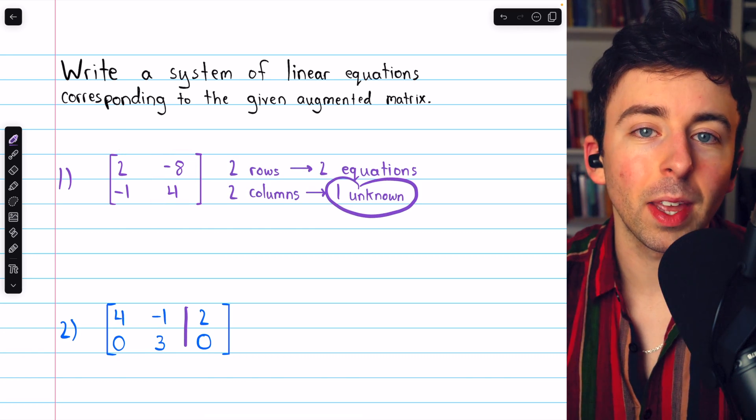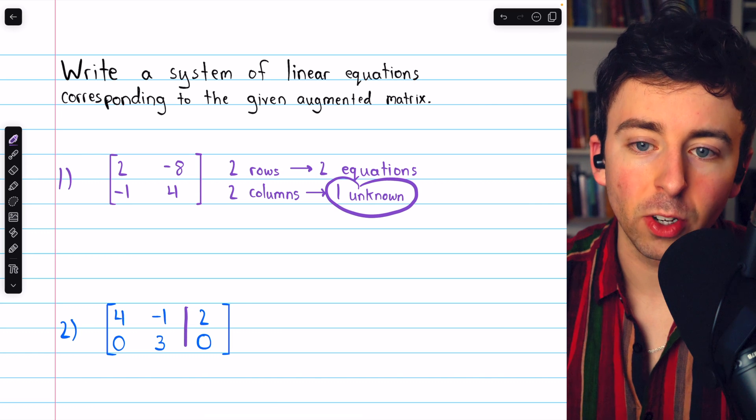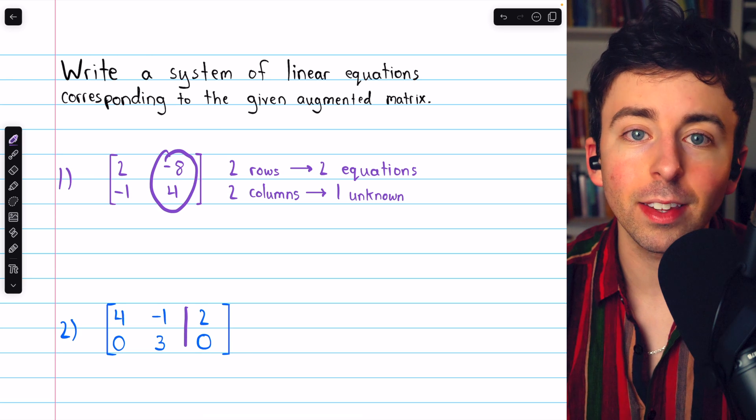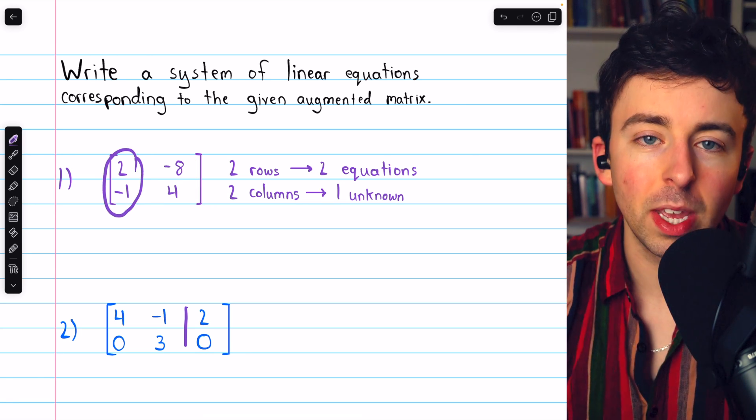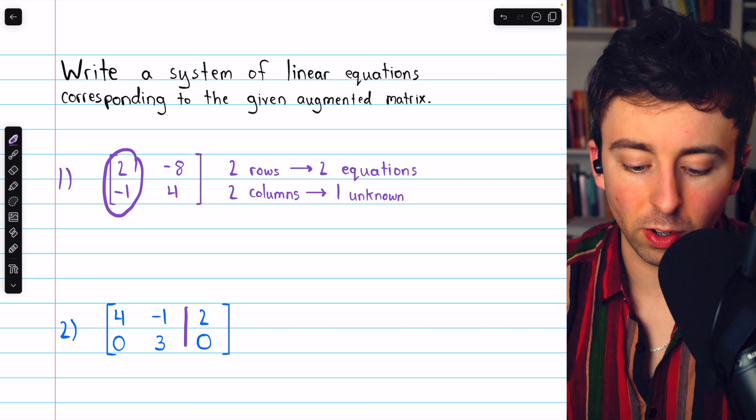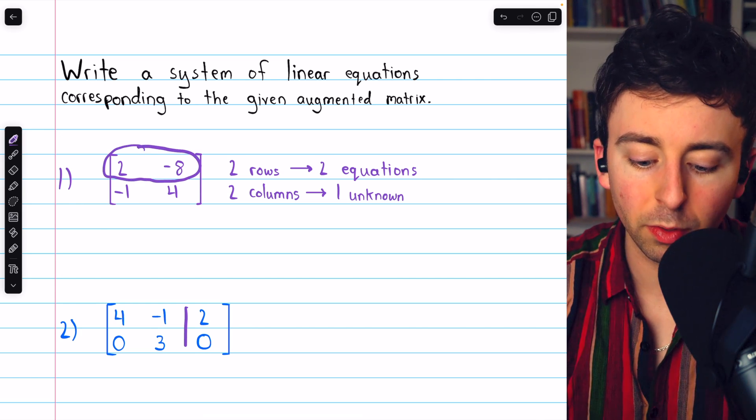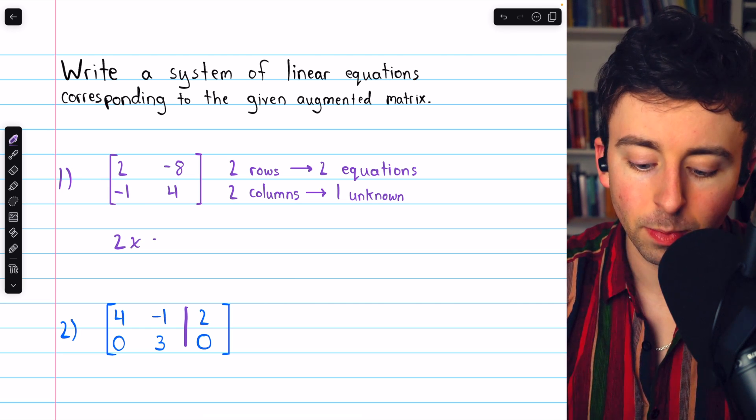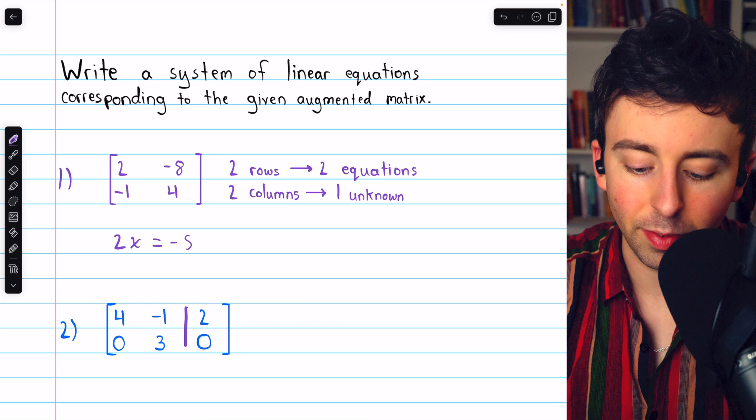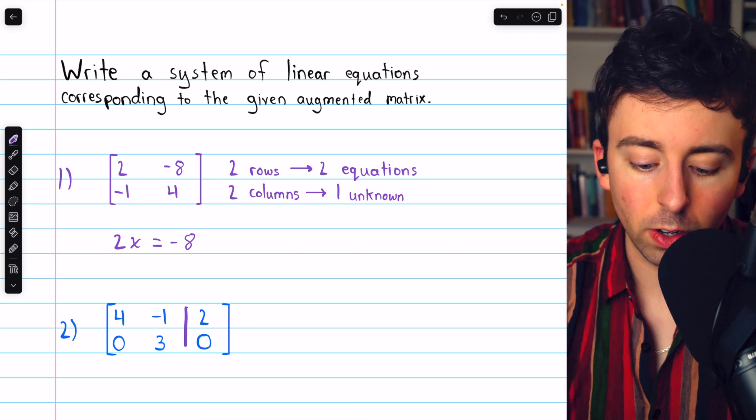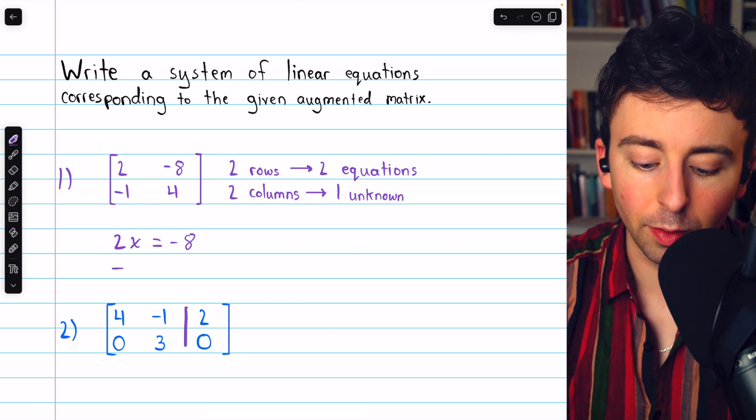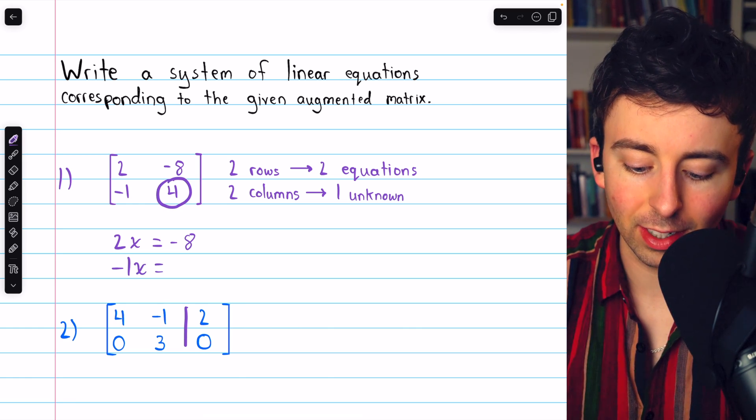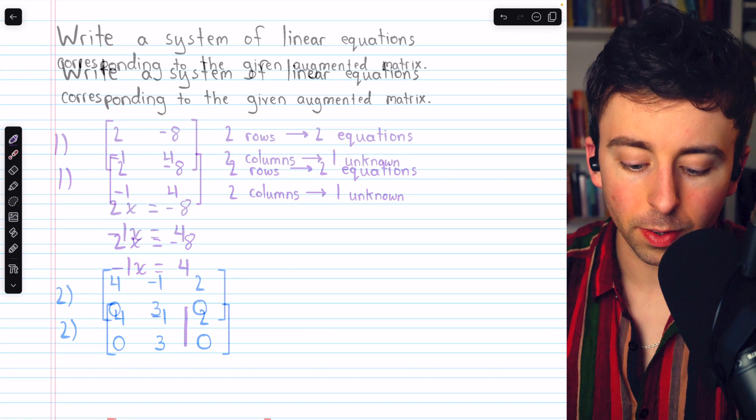What we call that one unknown is up to us. X is a common choice. The last column, as we've said, corresponds to the constants on the right side of the equation, so it's just this column here which tells us the coefficients. So then, the first equation, which comes from our first row, is two times our unknown x equals that constant of negative eight. The second equation, which comes from our second row, is negative one times the unknown of x equals that constant on the right, which is four. And it's really that easy.